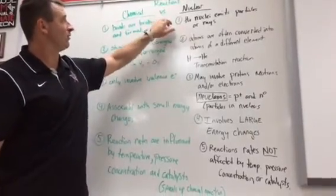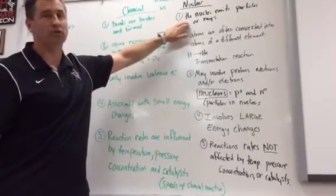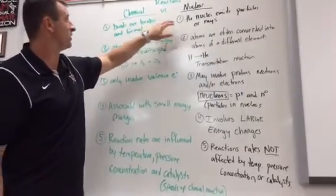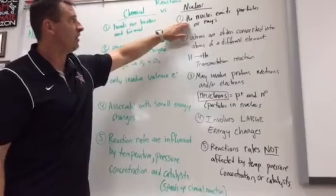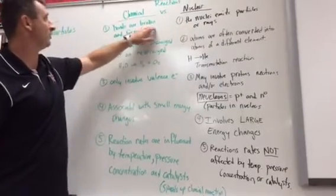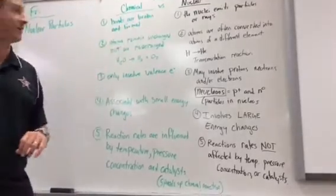Nuclear, the difference between chemical and nuclear, the biggest thing is that we're dealing with the nucleus. We're not dealing with the electrons, we're dealing with the nucleus. So in a nuclear reaction, the nuclei are going to emit particles or rays. In a chemical reaction, you're actually taking bonds and breaking them and forming them.